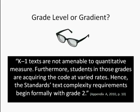The issues covered so far are fairly straightforward in nature and implication. However, the issues of text complexity require much more scrutiny and understanding, especially during this transition period to the Common Core. One particularly confusing and contentious issue regards text complexity. Some people have incorrectly interpreted that all students must read grade-level material from the start of grade one. But a closer look at Appendix A of the Common Core Standards suggests differently, saying that K-1 texts are not amenable to quantitative measure, and that students in those grades are acquiring the code at varied rates. Hence, the standard text complexity requirements begin formally with grade two.